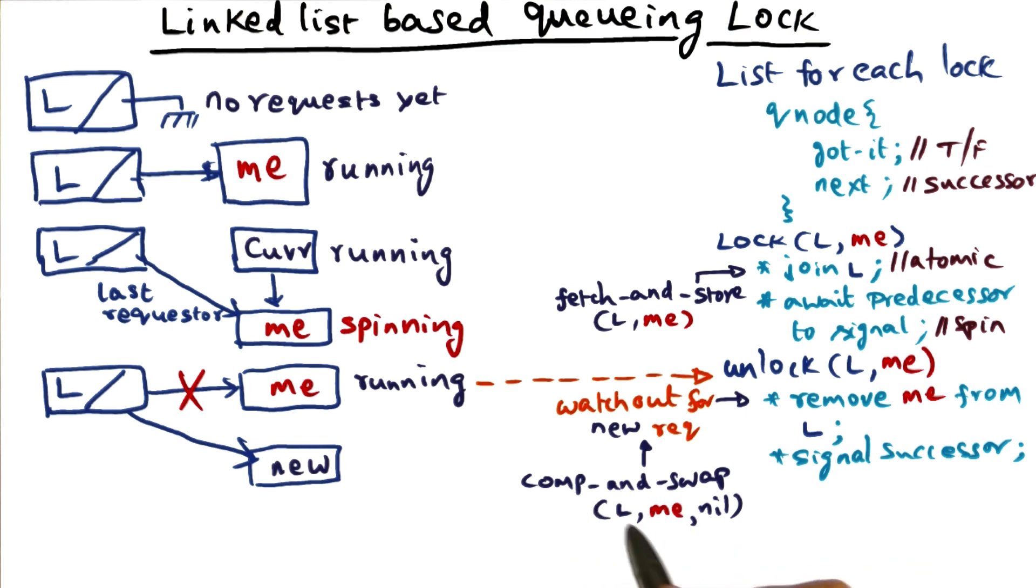But on the other hand, if the comparison failed, it won't do the swap. It'll simply return false. So it won't do the swap, but it'll return false. That's the semantic of this particular instruction.